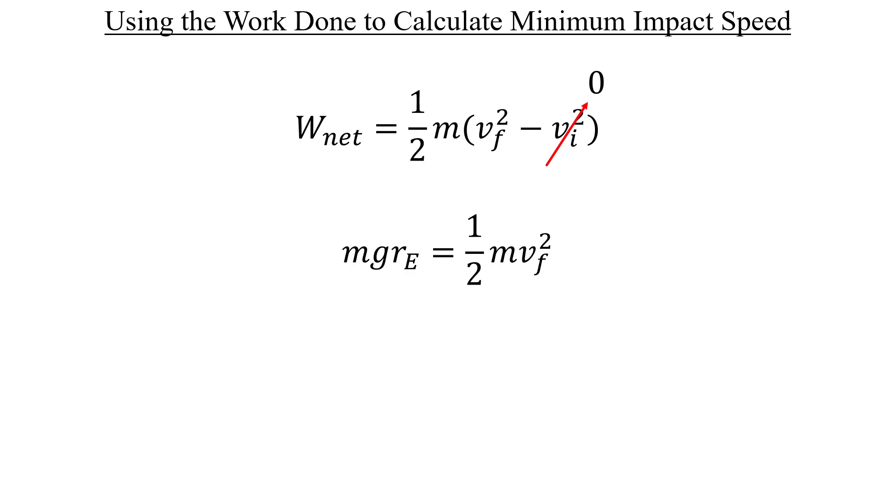If we multiply both sides of this expression by 2, divide out the masses, and then take the square root of both sides, we can get an expression for the speed of the asteroid on impact.